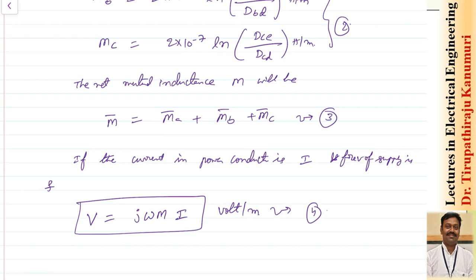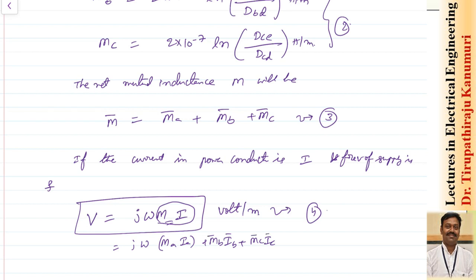Because of this induced voltage, current starts passing in the communication line, distorting the signal. The magnitude of flux linkages and induced EMF mainly depends on whether the current is balanced or unbalanced. For unbalanced currents the expression becomes V = jω(M_A×I_A + M_B×I_B + M_C×I_C). If all currents are equal, it simplifies to V = jωMI.